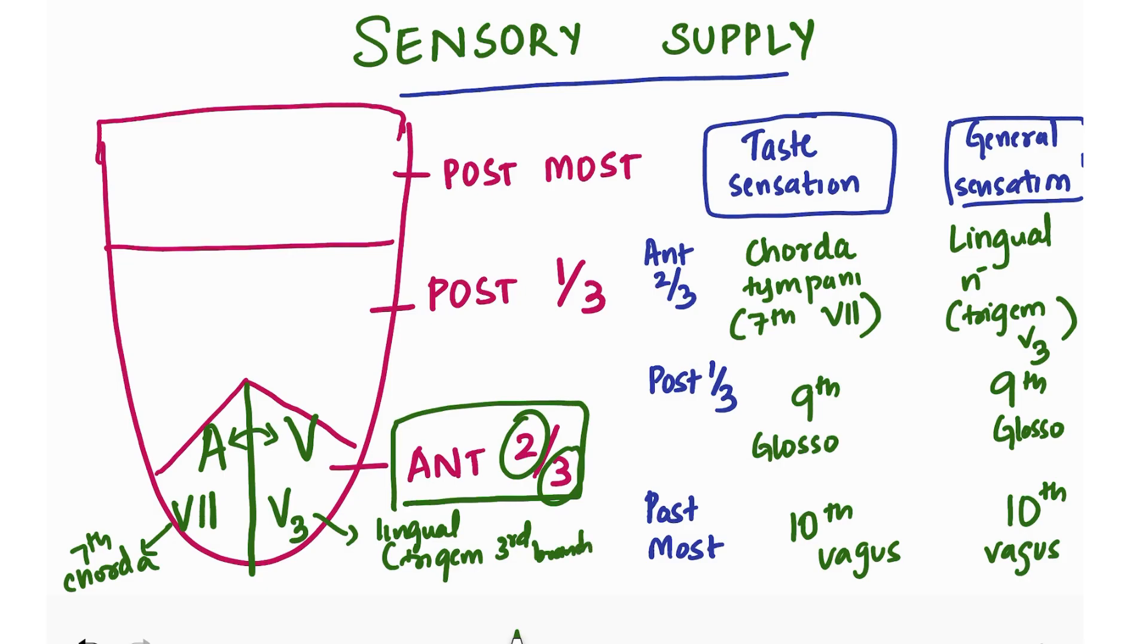For posterior one-third, take the P and invert it to get a 9 - ninth nerve supplies one-third, the glossopharyngeal nerve. For posterior most, it's the tenth nerve, vagus. How do we remember? Ten has a zero and posterior most has two O's in it. So tenth nerve, vagus.